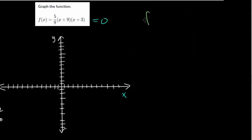We'll take our function f(x), we'll set it equal to zero. So our function is this 5/9 times (x + 9) times (x + 3). And actually find these zeros. So which x values make this equation zero?